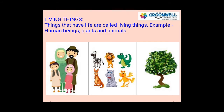We are humans, and so we are living things. Your pet dog or cat is an animal. Birds also belong to the animal family, hence they are living things too. All plants, big or small, belong to the plant family — these are living things as well.